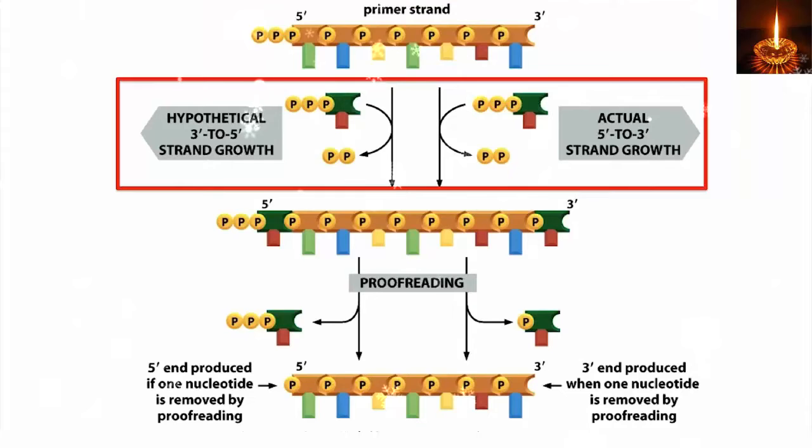In both of these, pyrophosphate is released as the incoming nucleotide is added. However, on the left, pyrophosphate is released from the end of the growing chain to create the phosphodiester linkage, whereas on the right, it is released from the incoming nucleotide.